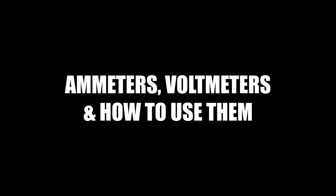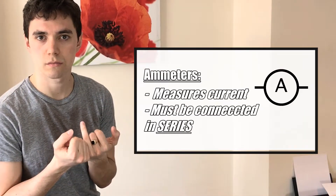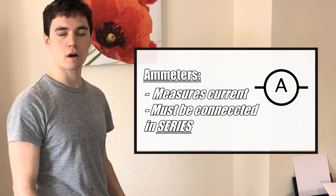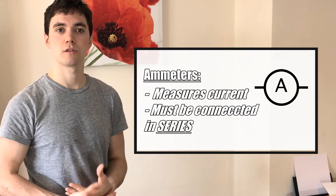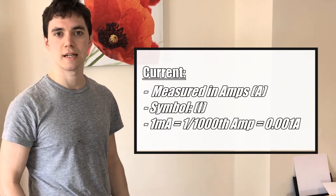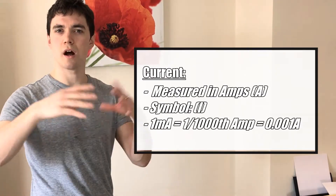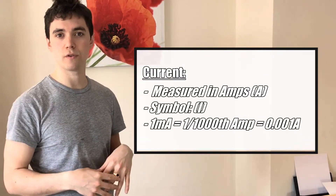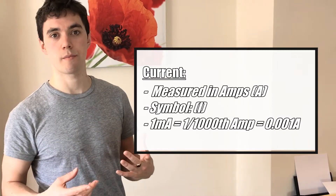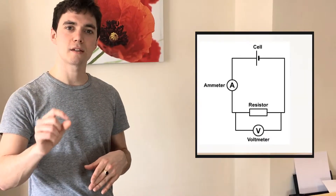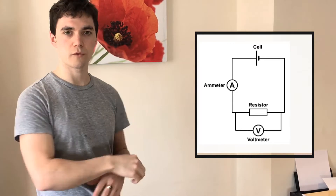A couple of things about ammeters and voltmeters. An ammeter measures the current — simple. The unit for current is of course amps, so you might have 3, 4 or 5 amps. You're unlikely to get really large numbers because one amp is actually quite a lot, so you may even be measuring in milliamps, which is one thousandth of an amp. The key thing about ammeters is we always connect them in series.